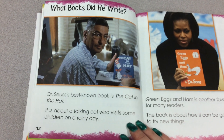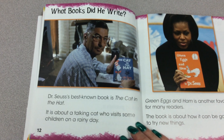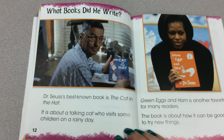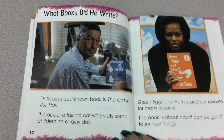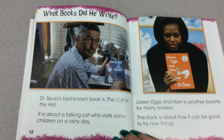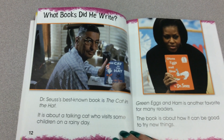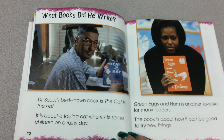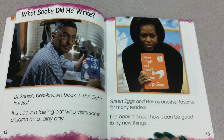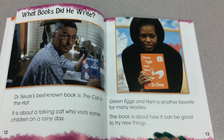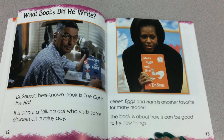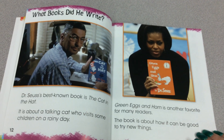What books did he write? Dr. Seuss's best known book is The Cat in the Hat. It is about a talking cat who visits some children on a rainy day. Green Eggs and Ham is another favorite for many readers. The book is about how it can be good to try new things.